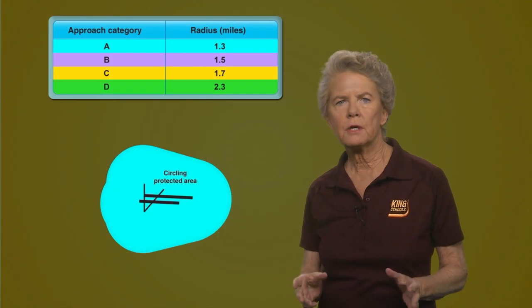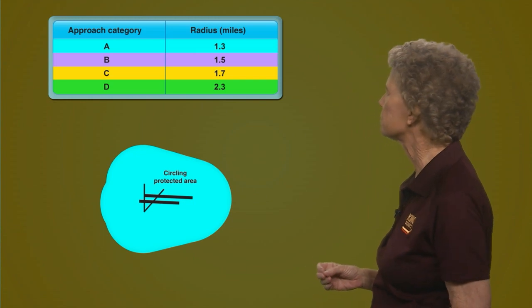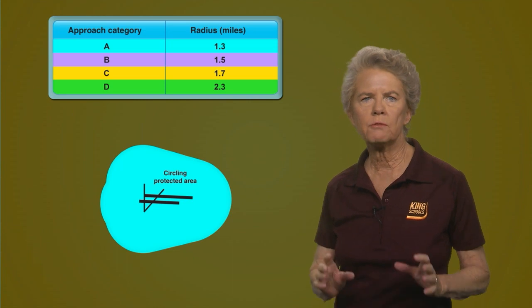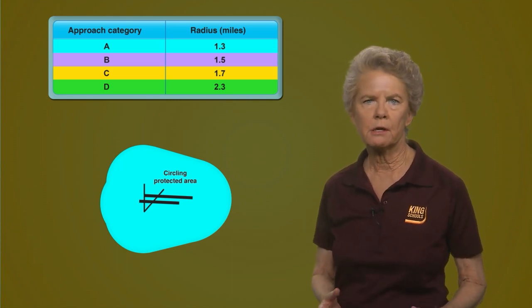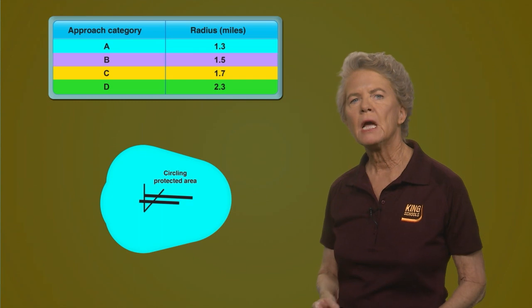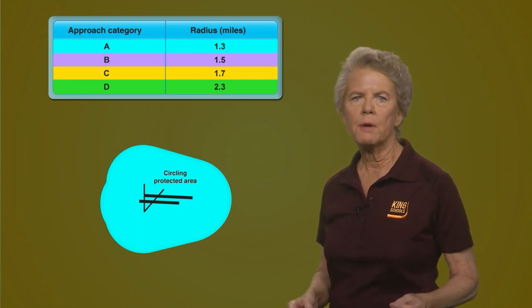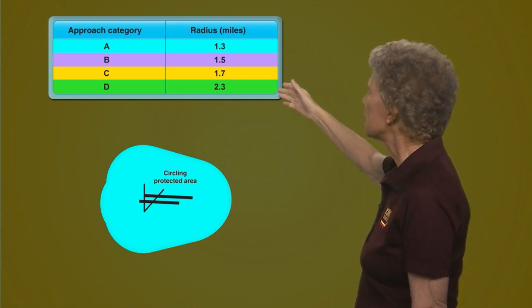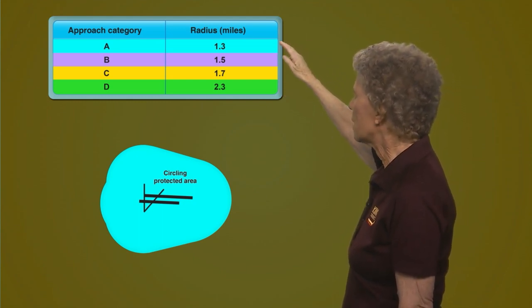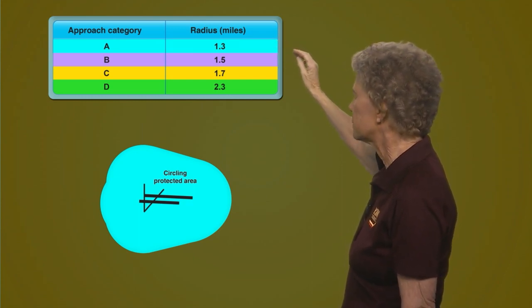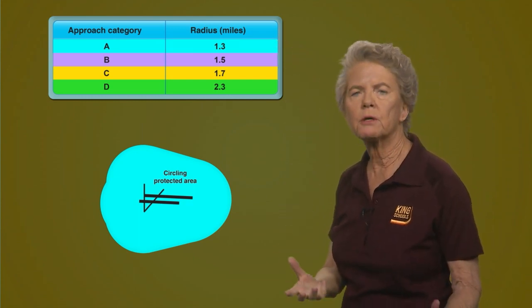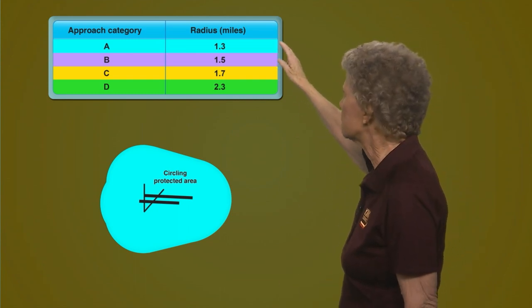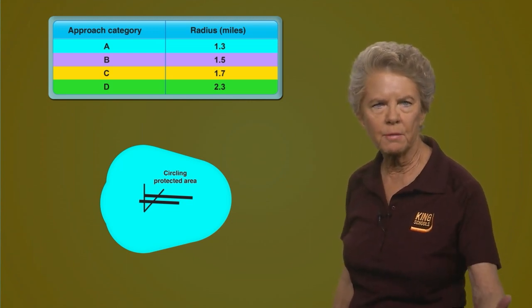Now here's how the FAA calculates the minimums if you're going to circle to land. The minimum descent altitude will give you at least 300 feet of clearance over obstacles in the area you'll use for circling. And the protected area is calculated by using a table based primarily on your approach category. For a category A aircraft with a VSO of 90 knots or less, which covers typical single-engine training aircraft, the radius is 1.3 nautical miles from the ends of the runways, from each runway.